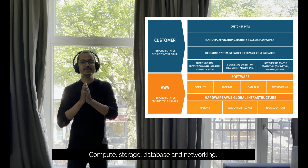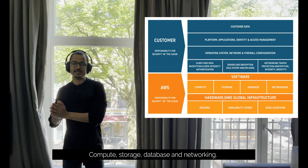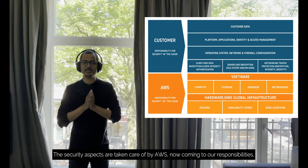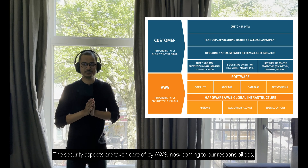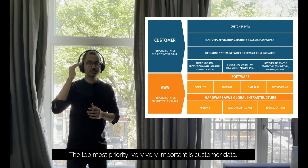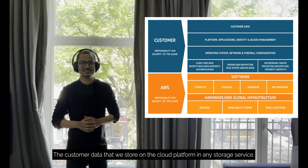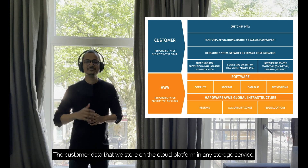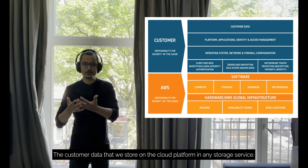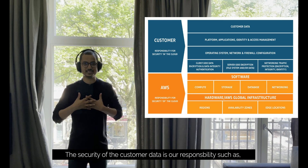The four sub-components are compute, database, storage, and networking. These are all AWS's security responsibilities. For our security aspects — security in the cloud — the top most priority is customer data. The customer data which we store onto the cloud-based platform is our responsibility to secure.